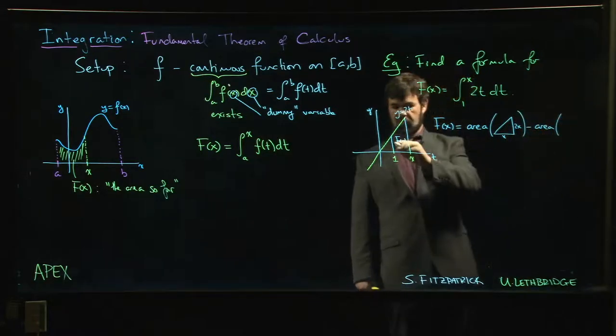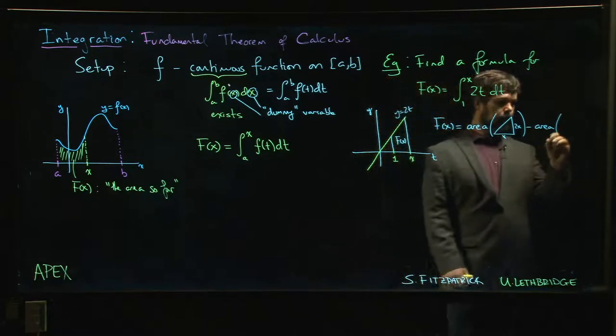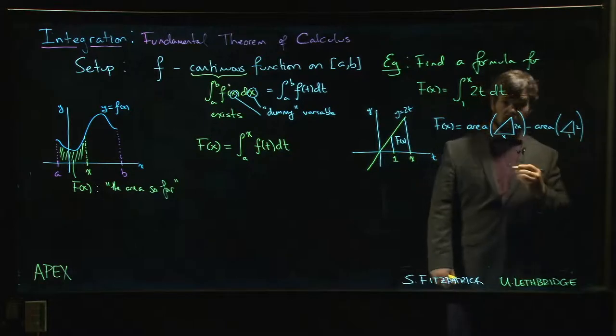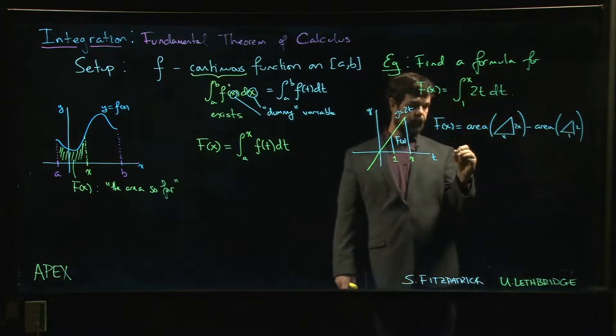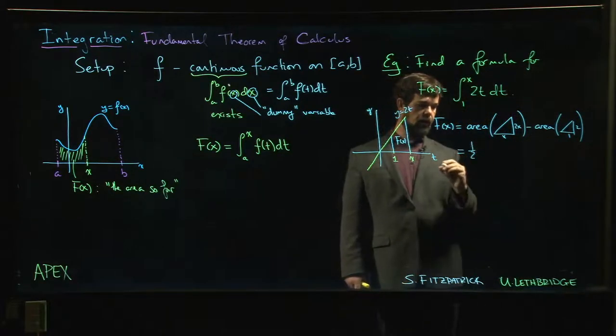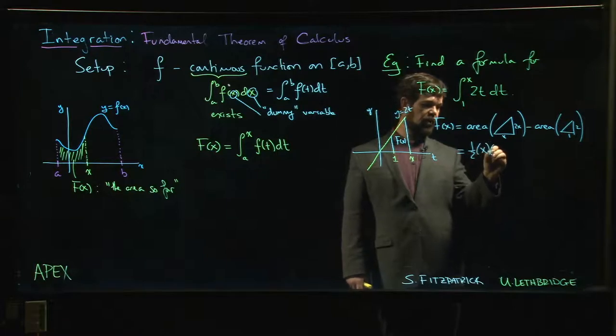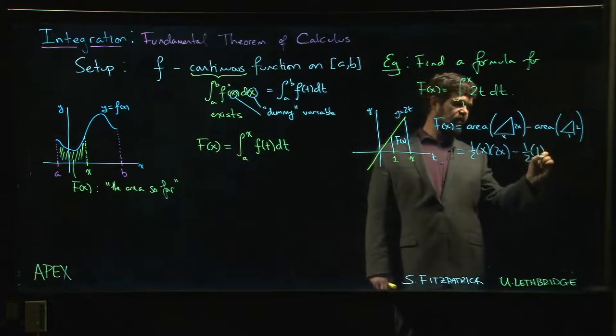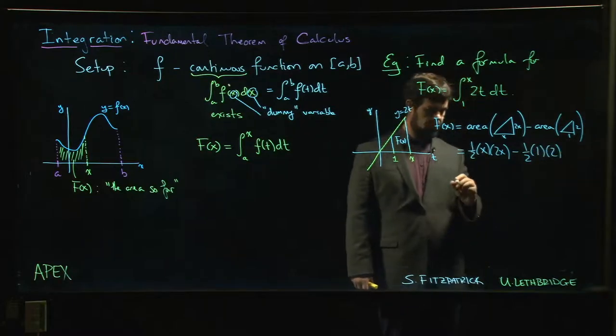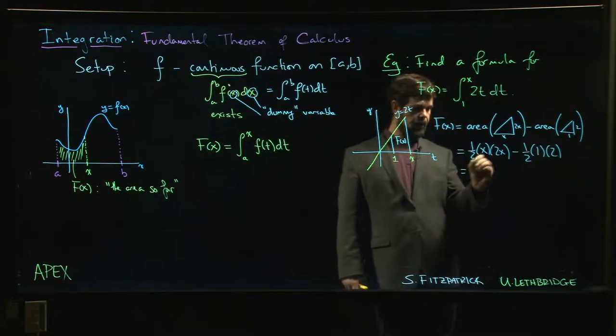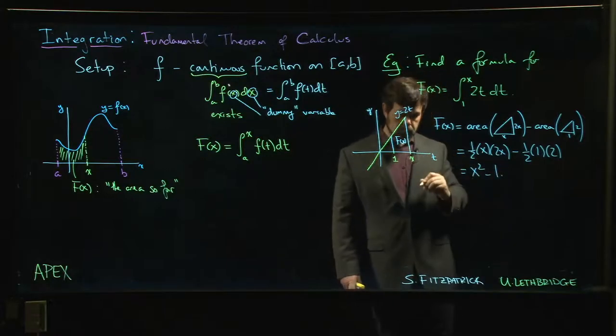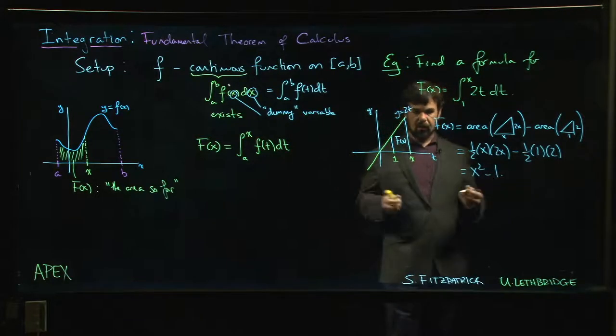Then we subtract off the area of that little triangle, which has base 1, height 2. One half base times height. Clean that up: f of x equals x squared minus 1. That's a nice result.